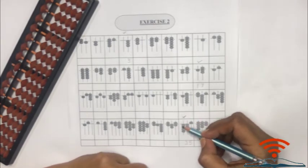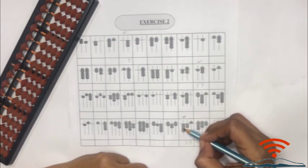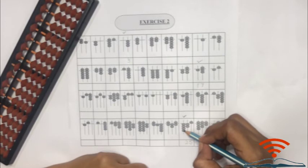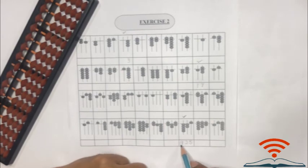Hundreds rod, 100, 200, 300, 400. It's 400. All together it is 425.